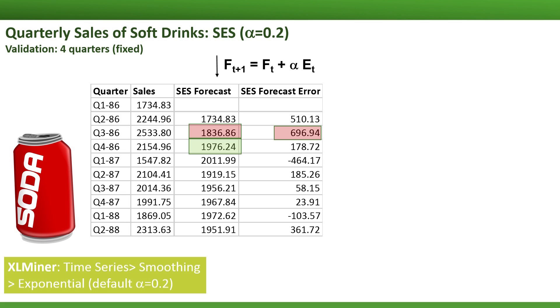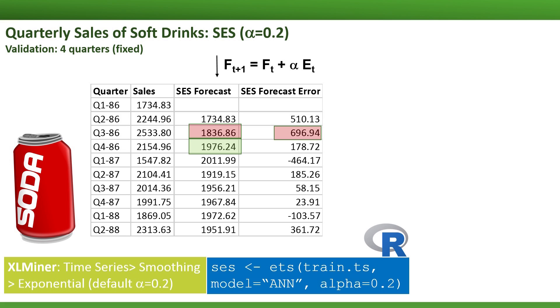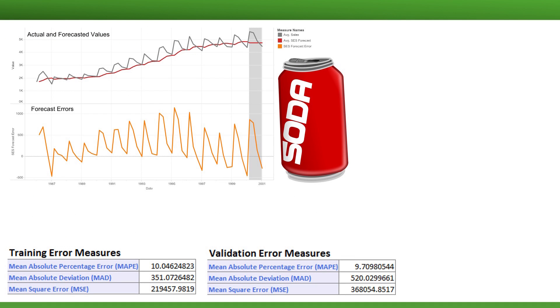In Excel Miner, for example, simple exponential smoothing is in the time series smoothing menu. In R, we can use the SES function in the forecast package. Looking at the performance of the simple exponential smoother for the soft drinks sales, does it perform well? Why? Let's look at another example.